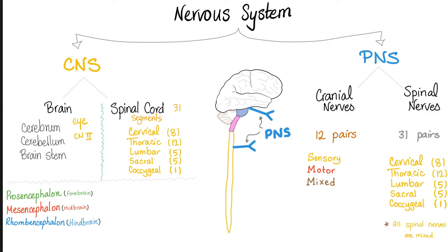Tell me about the peripheral nervous system. Cranial nerves: you have 12 pairs — some are sensory, some are motor, some are both. Spinal nerves are 31 pairs: eight in the cervical area, then thoracic, lumbar, sacral, coccygeal. All of your spinal nerves are mixed — they have both sensory and motor at the same time.